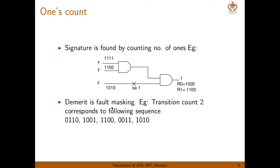What is ONES count? Instead of storing all the output, you count the number of ones in the output and store it. First, calculate the number of ones in the fault-free circuit output. Then in real time, when you apply the input again, you find the number of ones. When they match, that means there is no fault. We will take one example.